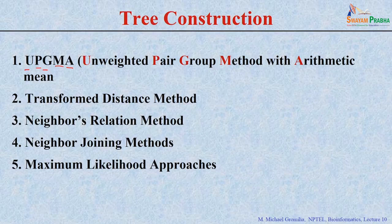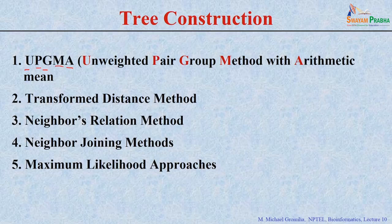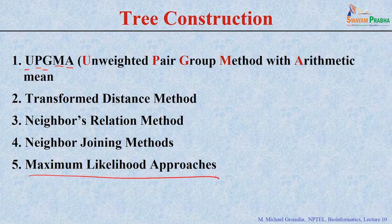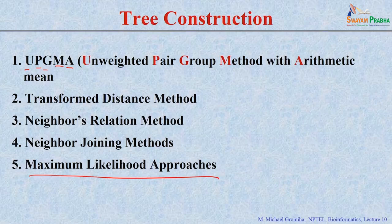UPGMA is a good method and easy to understand, but it has some disadvantages. To rectify that, several other methods have been proposed: the transformed distance method, neighbors relation method, neighbor joining method, maximum likelihood approaches, and so on. We will see how to construct trees based on UPGMA and the principles used in other types of methods.